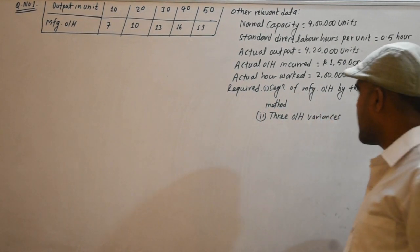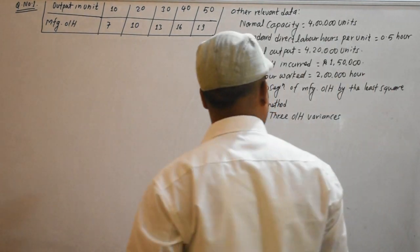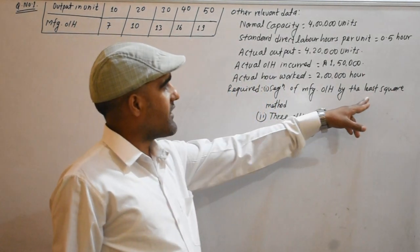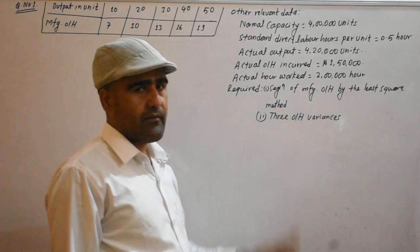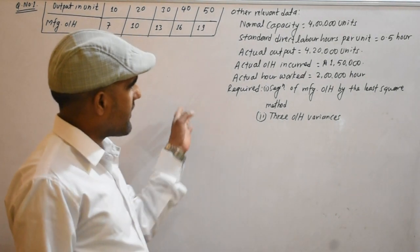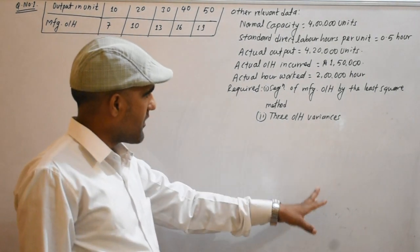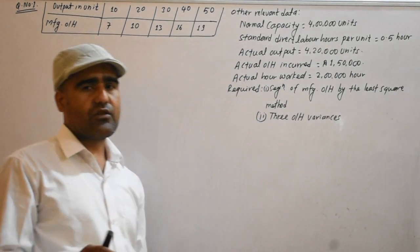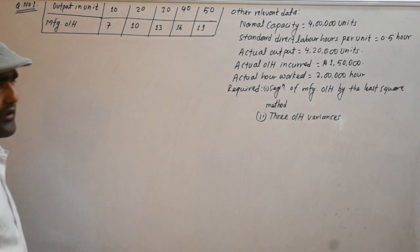Segregation of manufacturing overhead — manufacturing overhead by the least square method. The least square method should be segregated. We have three overhead variances.